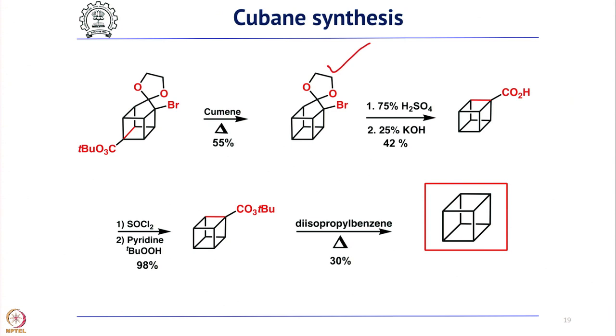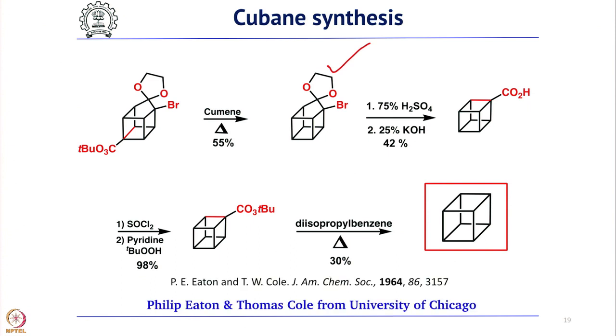This is one of the classical syntheses of a non-natural product called Cubane, reported by Philip Eaton and Thomas Cole from the University of Chicago in 1964. Afterwards, several derivatives of Cubane were synthesized and used — particularly army researchers were interested in several Cubane derivatives. To summarize: we started with 2+2 cycloaddition under photochemical conditions, did a proper retrosynthesis for Cubane, and using quasi-Favorskii rearrangement and 2+2 cycloaddition, we successfully constructed all 6 four-membered rings of Cubane, completing its total synthesis.